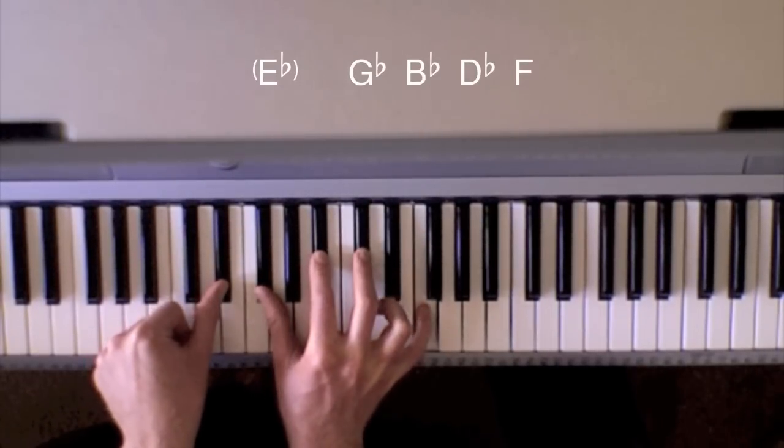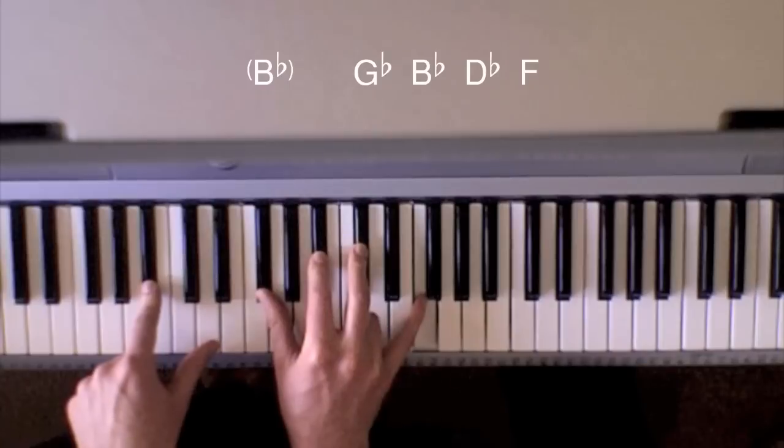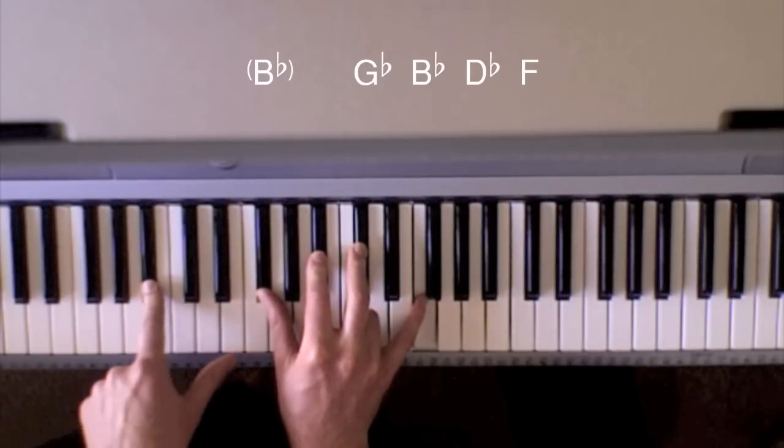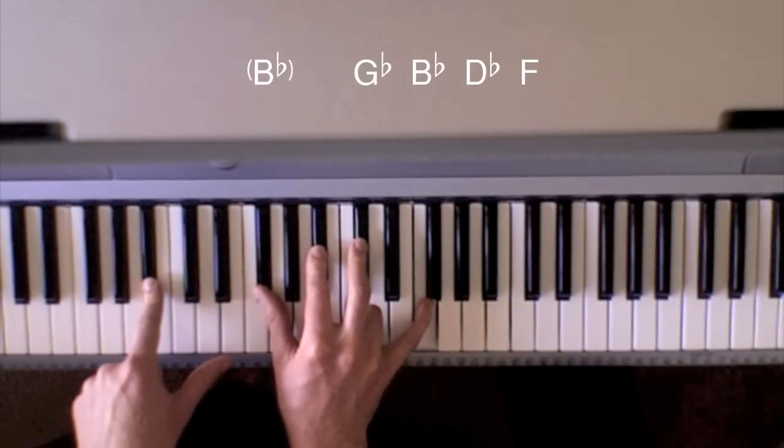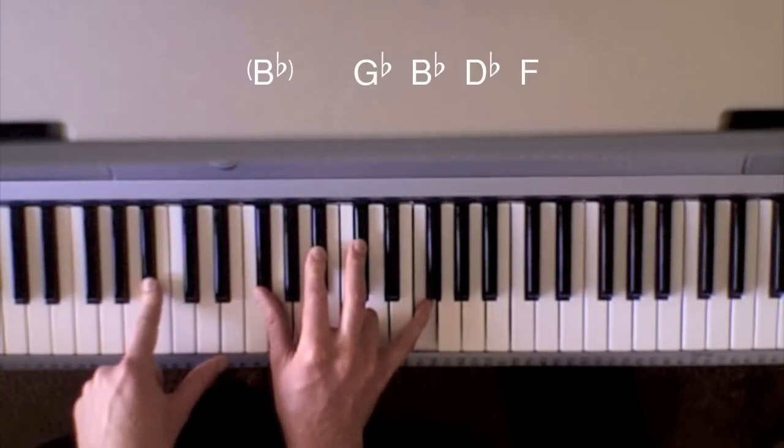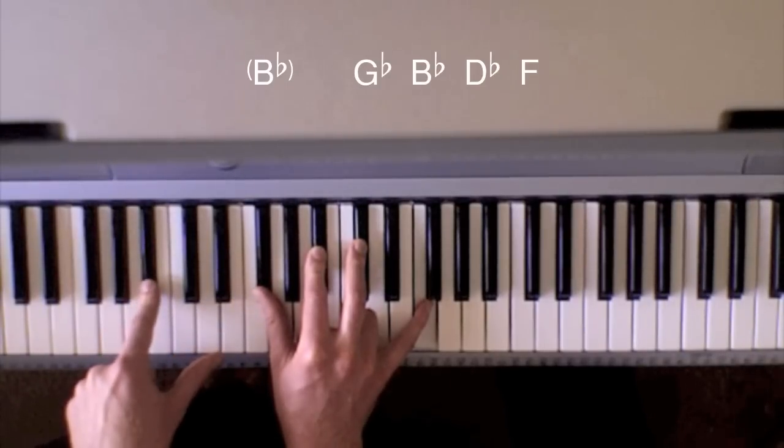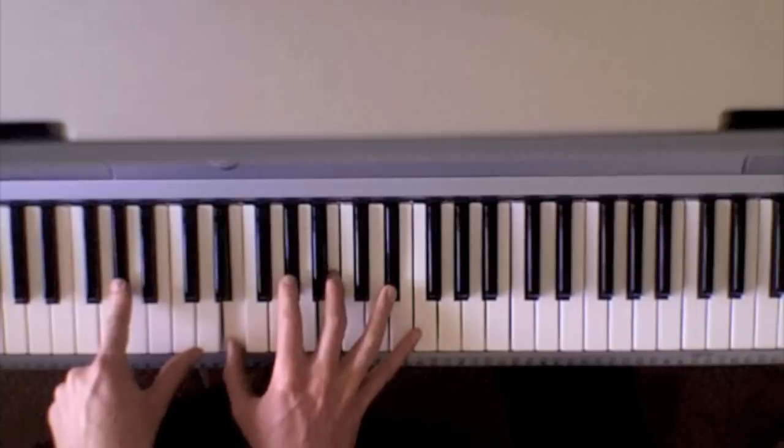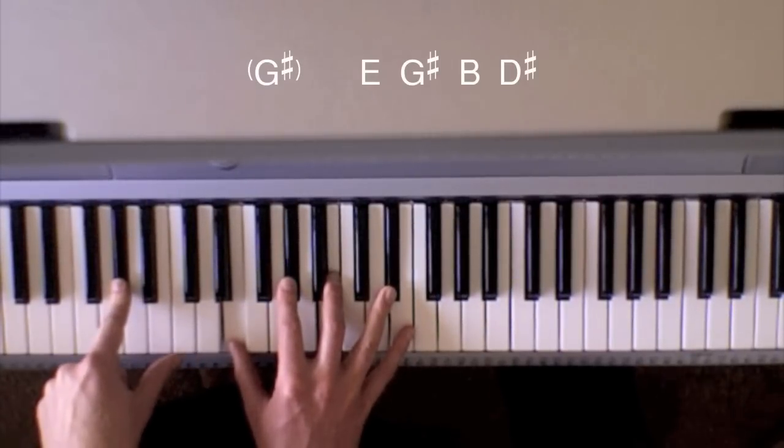Then we have the same chord but with Bb in the bass, which makes it a Gb major chord in first inversion because the third is in the bass note. That chord then transposes down a whole step.